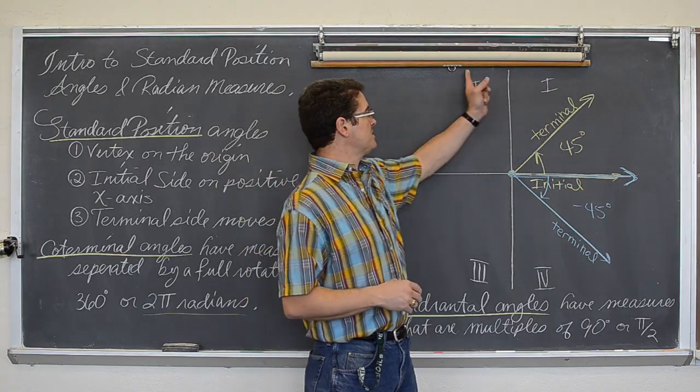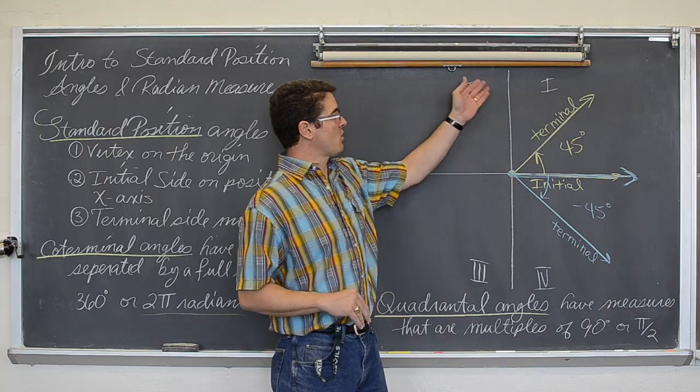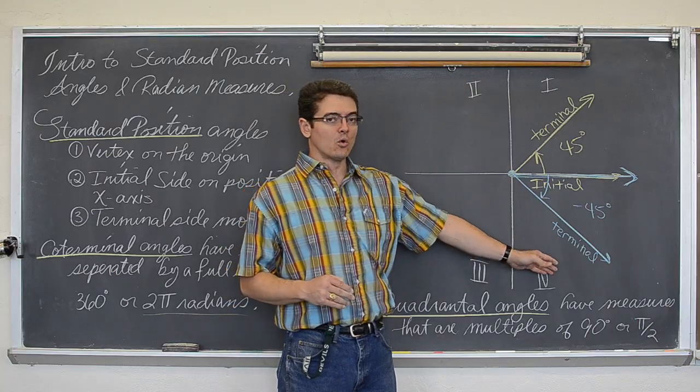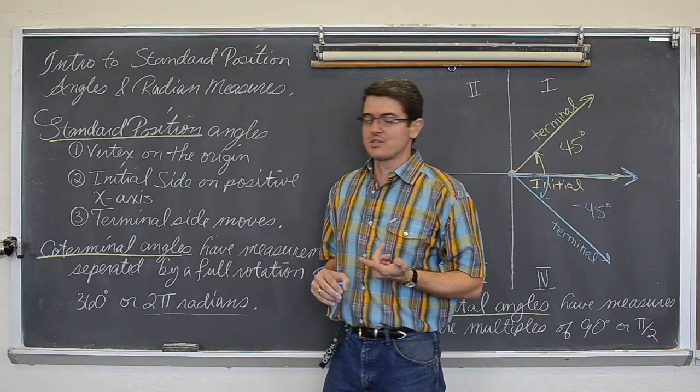Now, you see I have got 1, 2, 3, and 4 up here. This is just the coordinate plane. This is quadrant 1, quadrant 2, quadrant 3, and quadrant 4. So 45 degrees is in quadrant 1. And negative 45 degrees will be in quadrant 4.